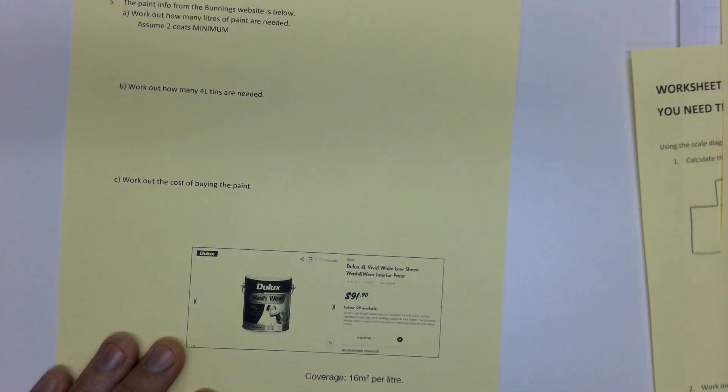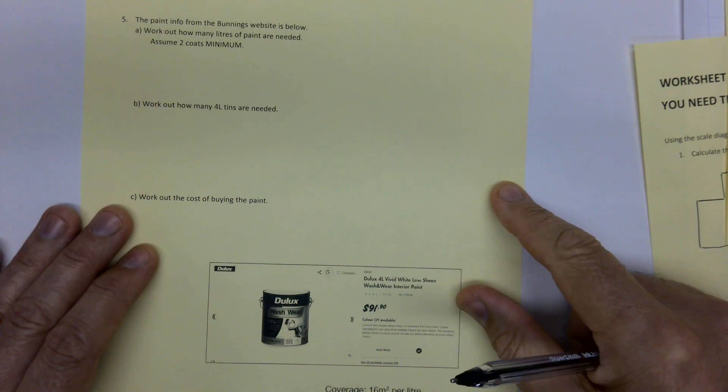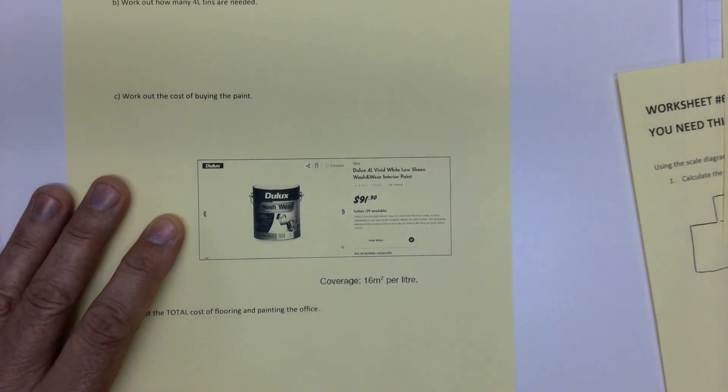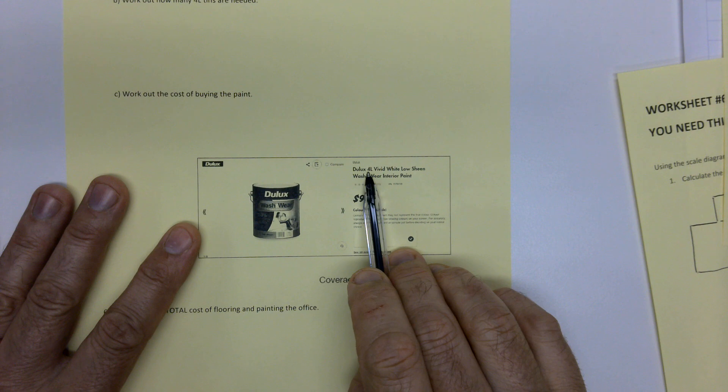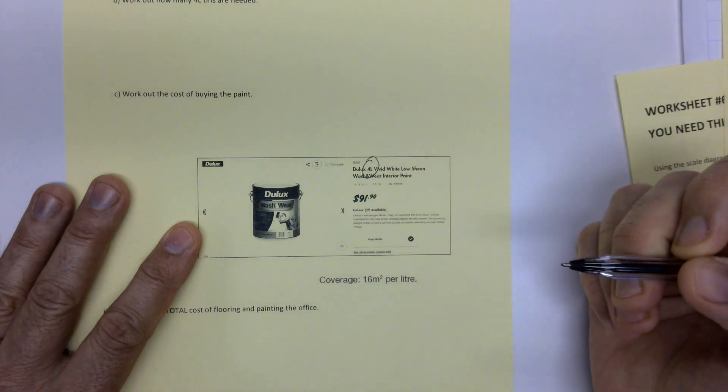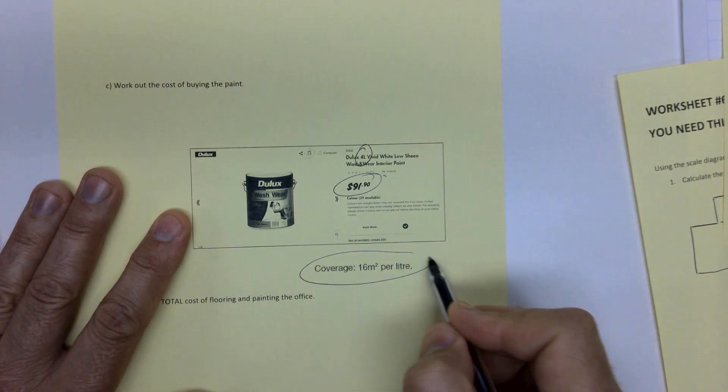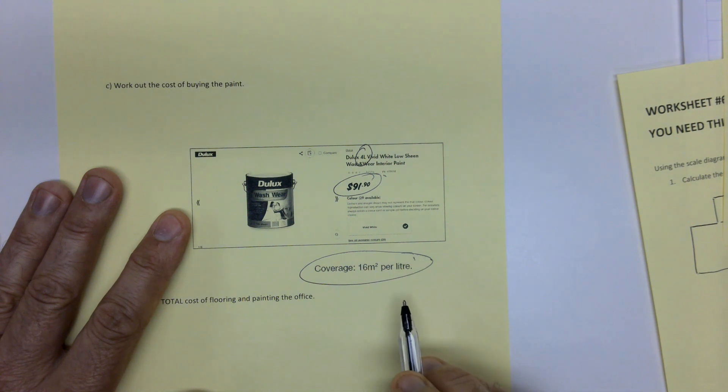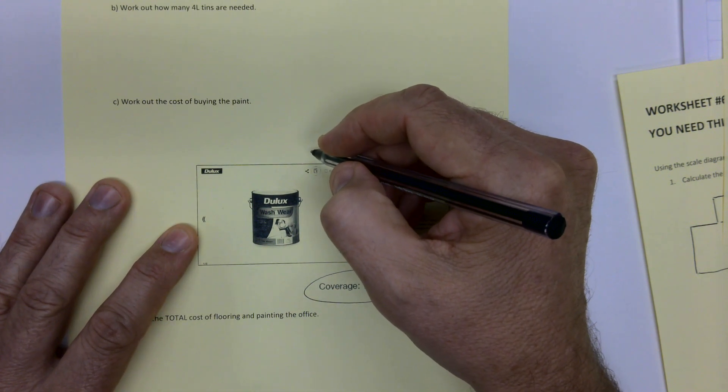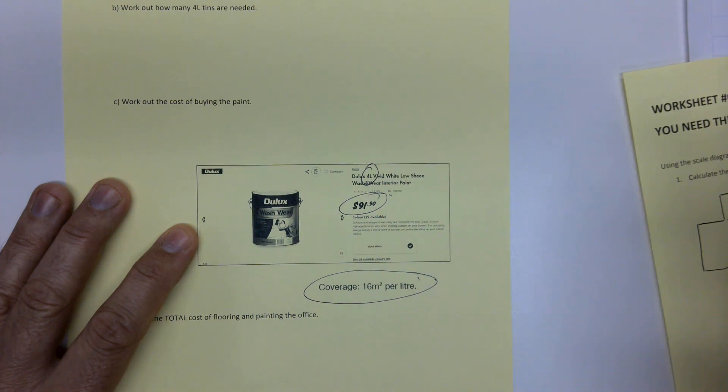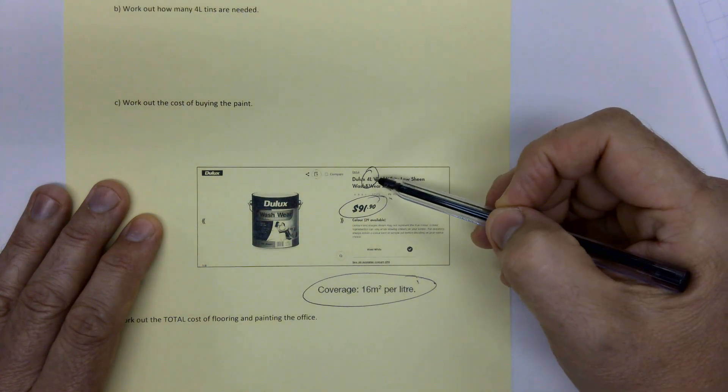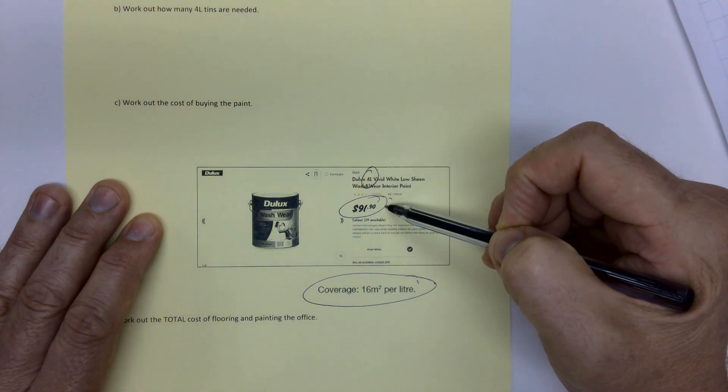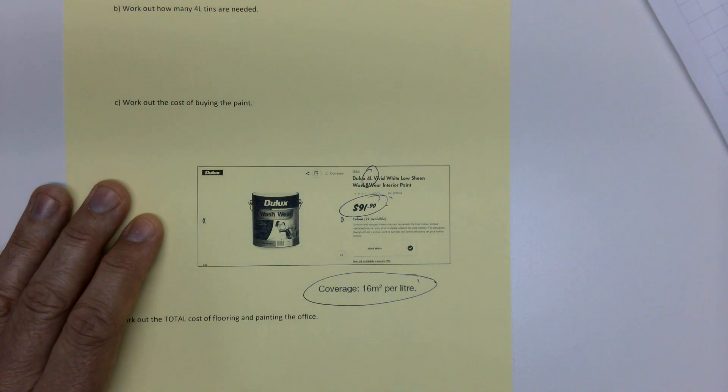So we've got the total area that's going to be painted. Now you then, on the Bunnings website, you need to go and get some paint. Now it doesn't really matter what the paint, as long as it's interior paint. What you need is the size of the tin. You need the cost per tin. And you need the coverage. Those three things. So you need cost, you need cost, size, and how much it actually is worth.